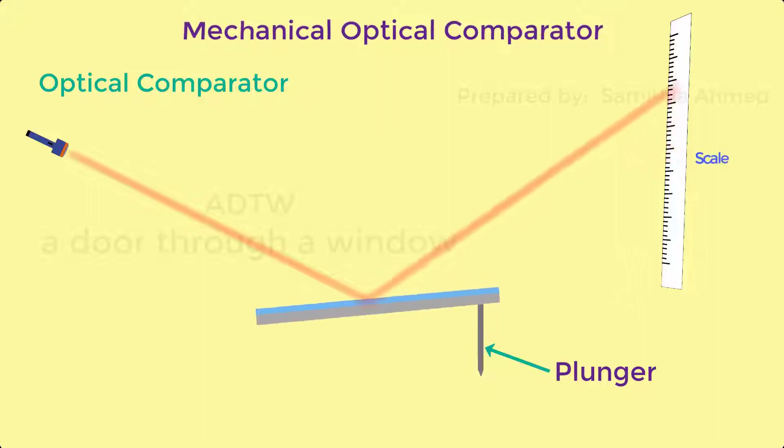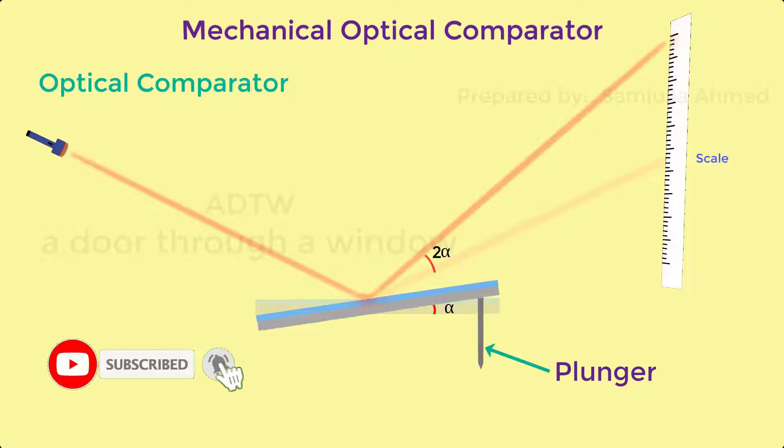This movement will be projected on the graduated scale. So that if the mirror tilts an angle alpha, then the movement in the reflected ray will be angle 2 alpha. This is the working principle of optical comparators.